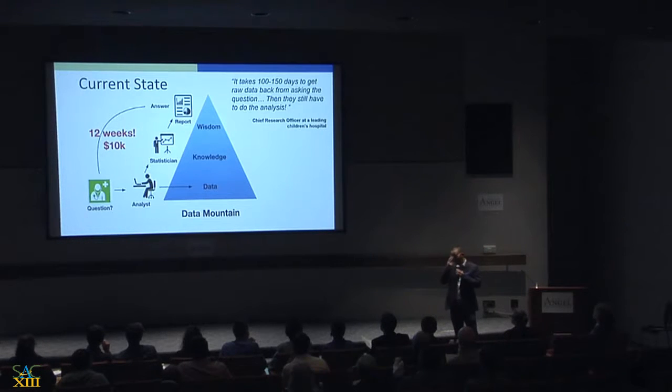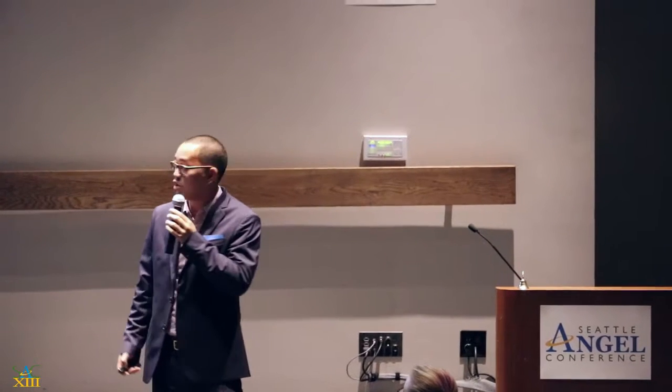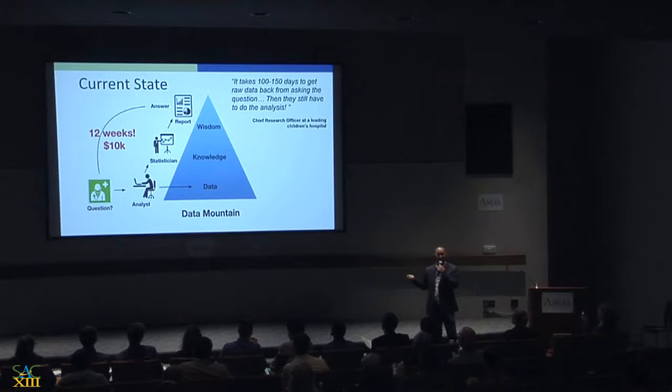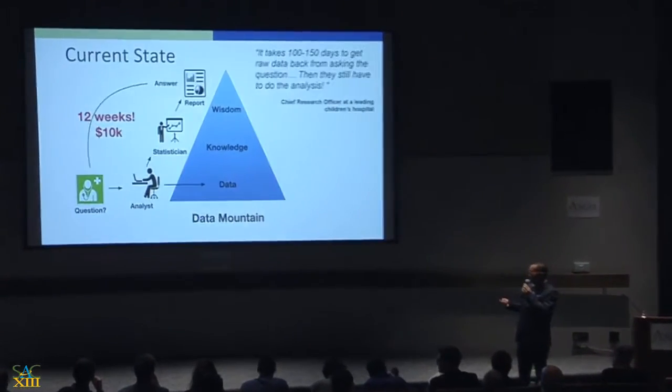The current state of play: I work at Seattle Children's — a well-funded, leading research children's hospital. This is how I get data. I have to find an analyst. They go write some code to the data mountain, write some SQL. Once they get that, they pass it to a SAS session and generate reports. It costs $10,000 a time, and it takes 12 to 15 weeks to get a simple answer: does drug A work better than drug B for patient X? That's a 12 to 15 week turnaround. We want to fix that.